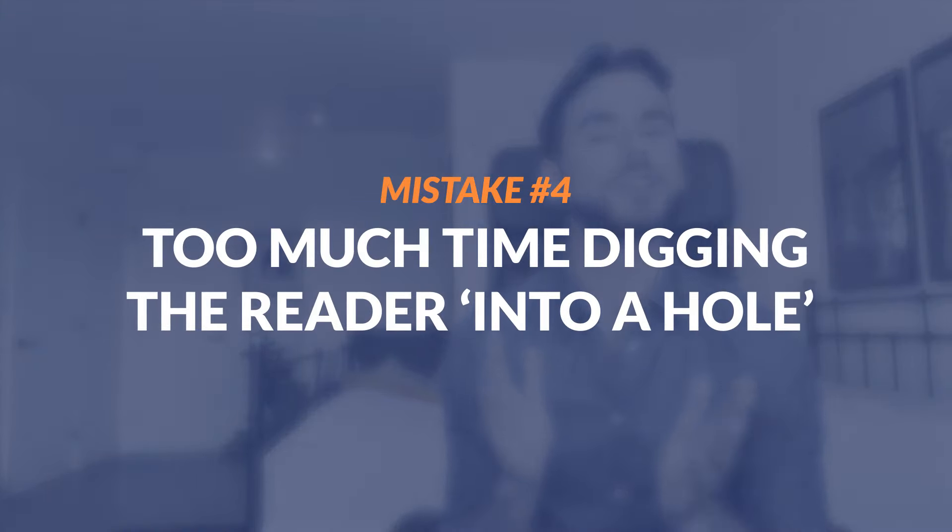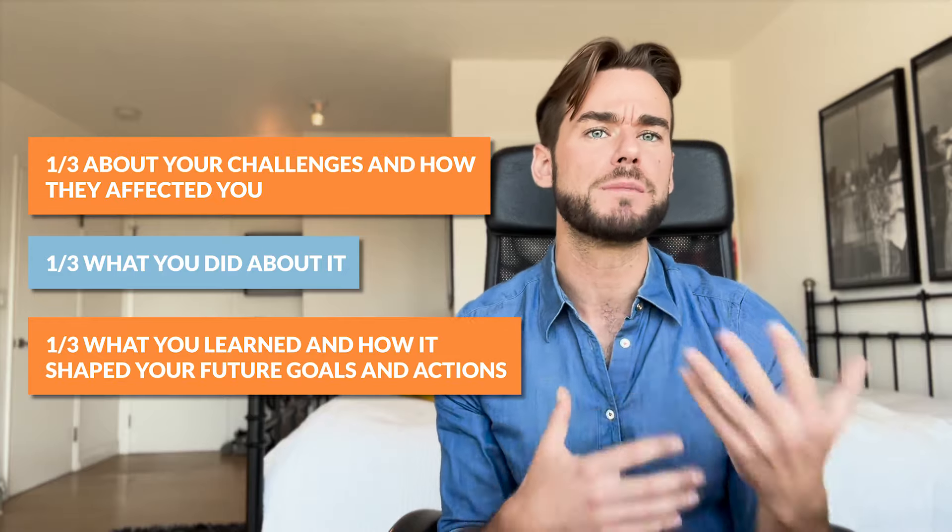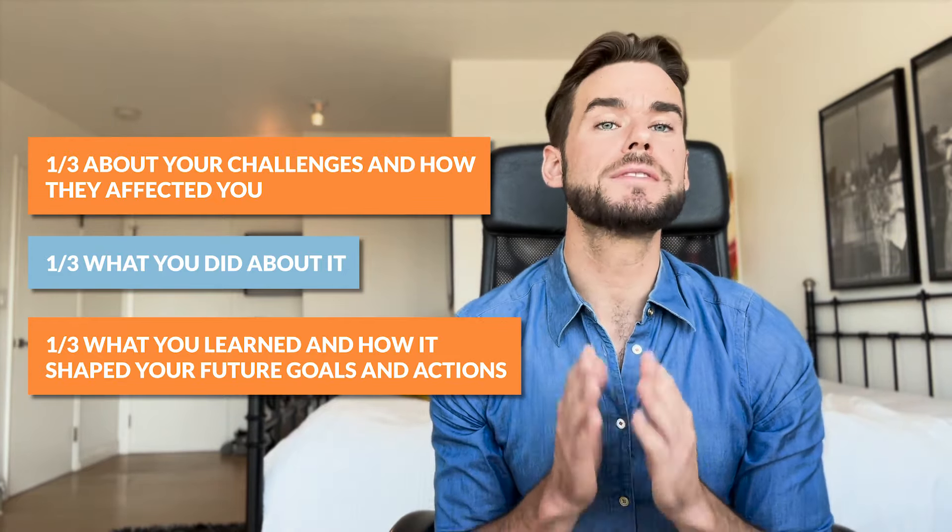A better approach would be to roughly aim for about a third of your essay to be about challenges and how they affected you, another third about what you did about it, and the last third about what you learned and how it shaped your future goals and actions. This helps demonstrate your growth and resilience, and it also signals that the challenge is a part of your life but not your entire life — which is bound to leave a lasting impression on your reader. If you want more concrete guidance on how to write about your challenge, the link below has an exercise called "feelings and needs," which is the one-stop shop to help make sure that the ratio of challenge to post-challenge is where it needs to be.